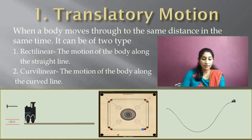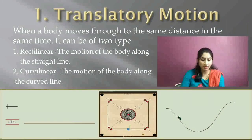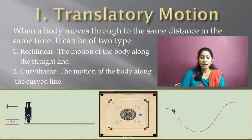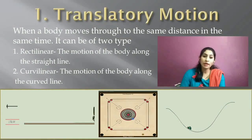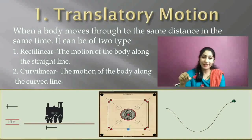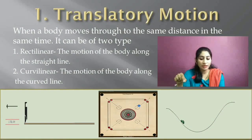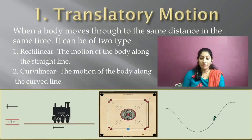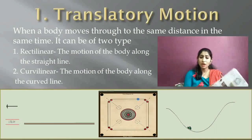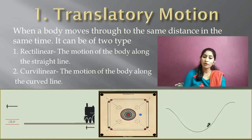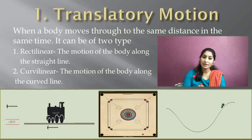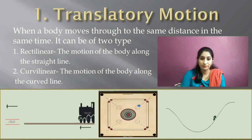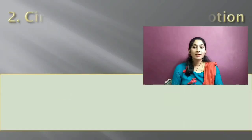The next type of translatory motion is curvilinear motion — the motion of a body along a curved path. When a body moves along a curved path, it possesses curvilinear motion. You can see in the diagram a car moving along a curved path. Another example is a ball thrown upward at an angle — as it comes down, it follows a curvilinear path.